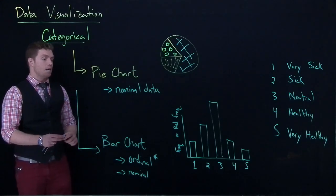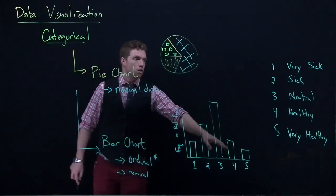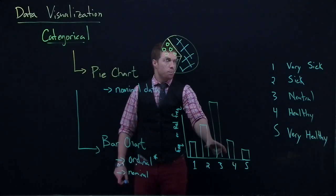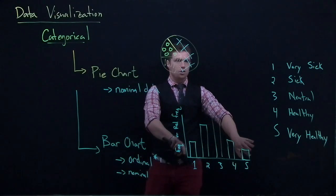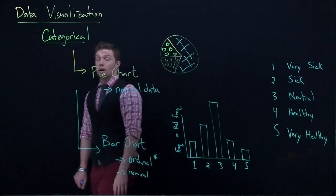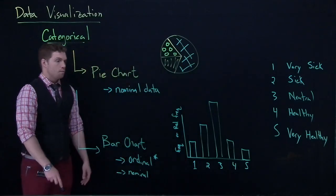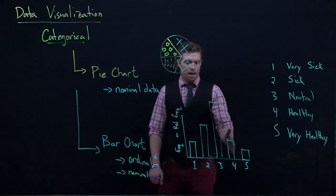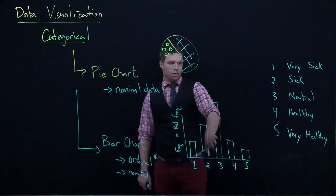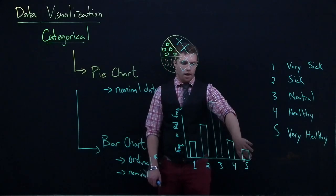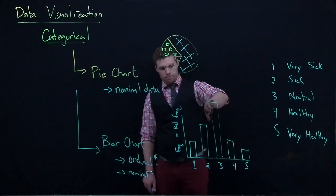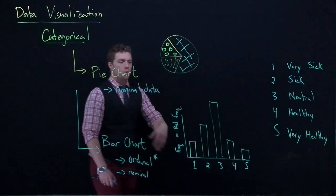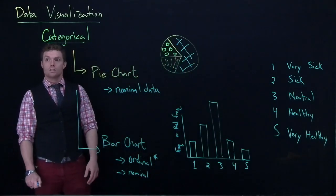Now the nice thing here is that because order matters with our ordinal data, we can see how there is some trend. Most people are somewhere between sick and healthy. And the extremes of very sick and very healthy don't occur very often. And we can say 90% of people are sick or healthier. Or we could say 60% are from neutral or healthier. We can say those things because there's actually order.